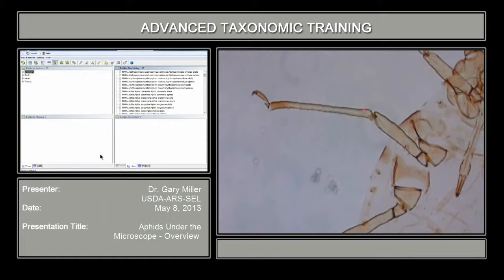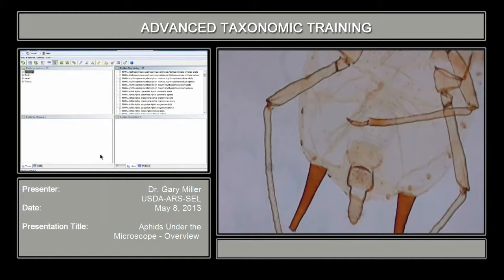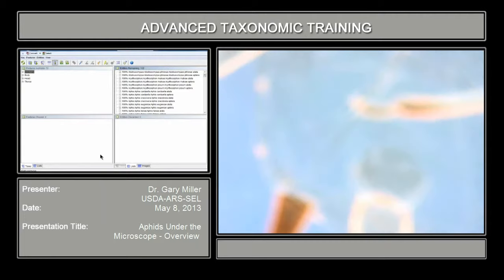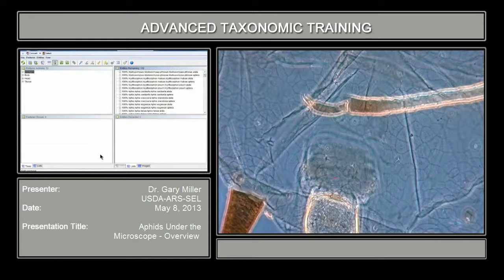In some keys, some of the couplets call for the amount of pigmentation that may occur on a specimen. Sometimes the abdomen has reticulated patterns, and that's sometimes diagnostic. You can see the reticulation nicely over that entire specimen.